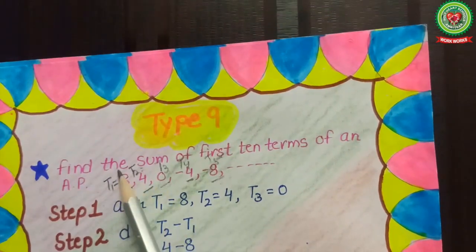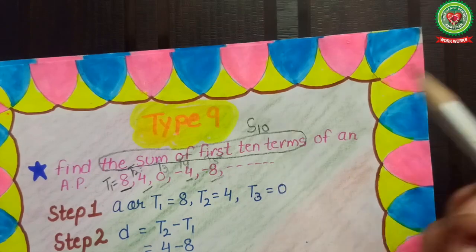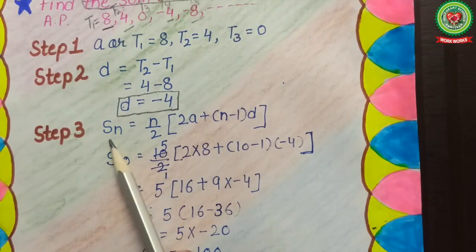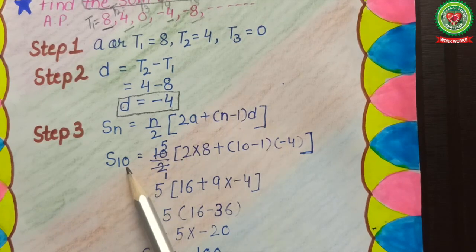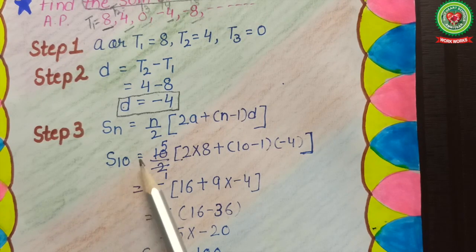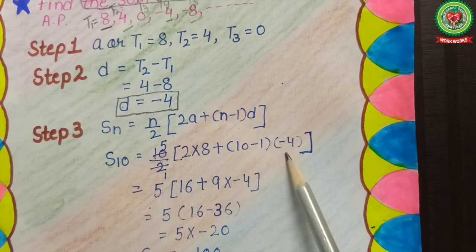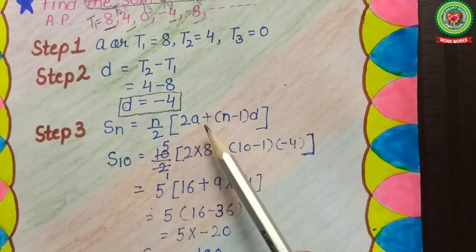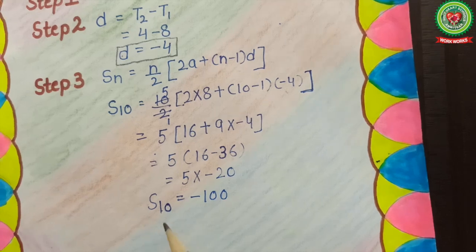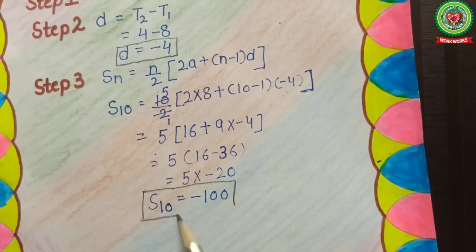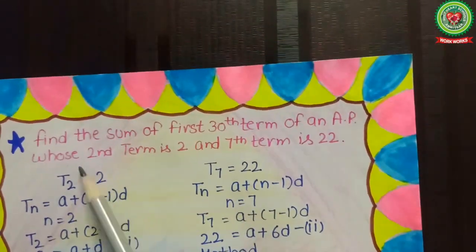Step 3: we need to find the sum of the first 10 terms, that is S10. We apply the formula: Sn = n/2 × (2a + (n−1) × d). Substituting n = 10, a = 8, and d = −4: S10 = 10/2 × (2×8 + (10−1) × (−4)). By solving, the sum of 10 terms is equal to −100.